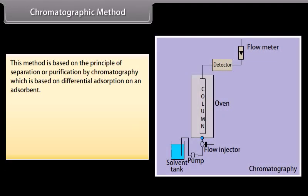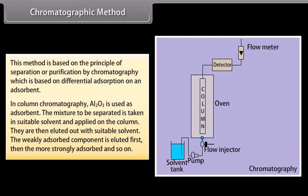Chromatographic method. This method is based on the principle of separation or purification by chromatography which is based on differential absorption on an absorbent. In column chromatography, Al2O3 is used as absorbent. The mixture to be separated is taken in suitable solvent and applied on the column. They are then eluted out with suitable solvent. The weakly absorbed component is eluted first, then the more strongly absorbed and so on. This method is suitable for such elements which are available only in minute quantities and the impurities are not very much different in their chemical behavior from the element to be purified.